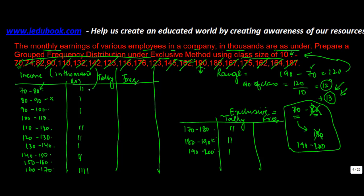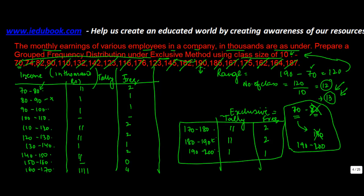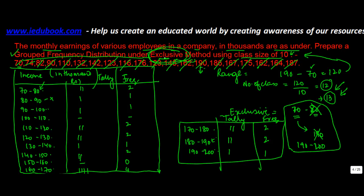Now we count the tally marks and record the frequencies. The results are: 2, 1, 1, 0, 2, 2, 1, 2, 0, 4, 2, 2, 1. That completes the grouped frequency distribution under the exclusive method. In the next example, we will look at how to use the inclusive method.